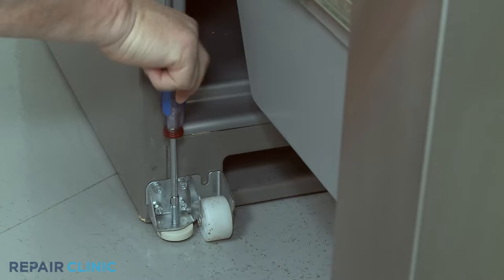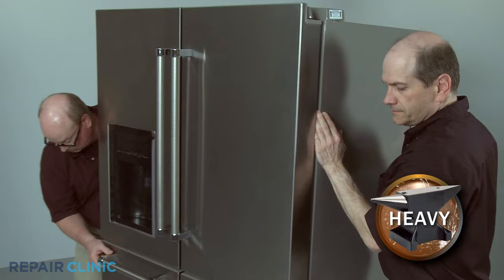Roll the appliance forward. On some models, you will need to detach a water supply line from the inlet valve before you can remove the access panel.